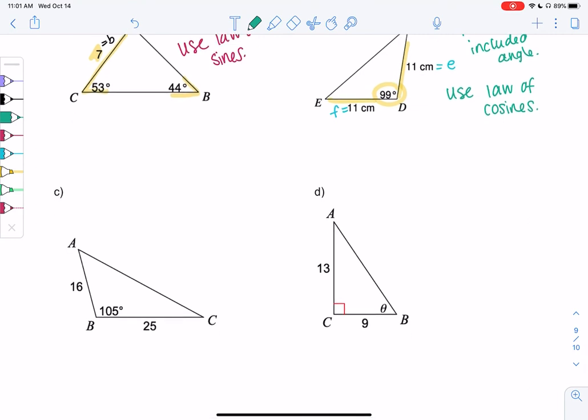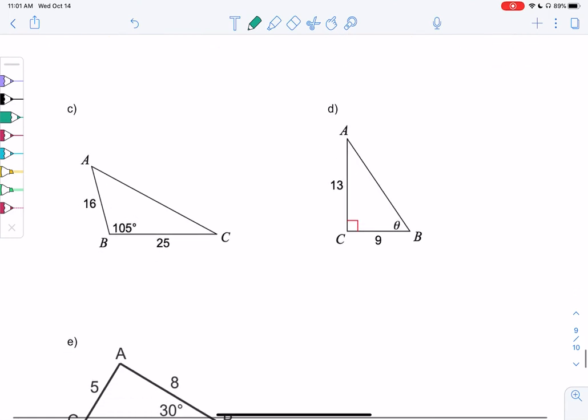So I'm giving you the tools so you can do this more efficiently. All right, we have a couple more. Part C. I have side C is 16, because that's opposite angle C. Angle B is 105. And side A is 25. So this looks like side, angle, side (SAS) again. So we use law of cosines.